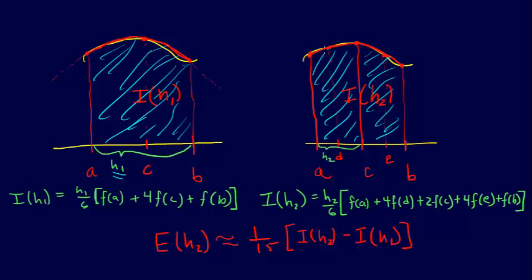And then we can apply Simpson's one-third rule to each portion of this. So we do the composite Simpson, or the multiple application Simpson one-third rule. And we can get an estimate for the integral of this. And we can call that IH2. And we have IH1. And just as we did in Richardson extrapolation, we can come up with an equation for the error.